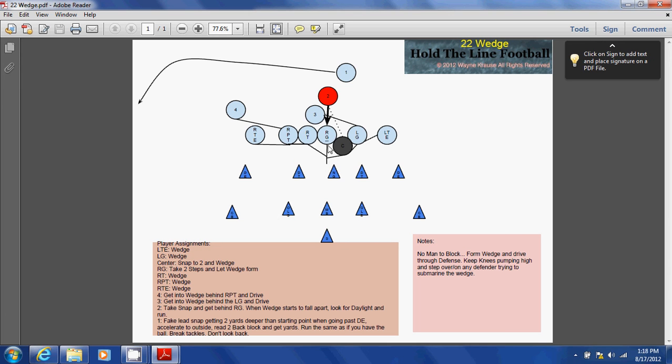The right guard will feel—basically he'll take his two steps and then he will quickly feel the wedge form behind him and start to push him forward like he is a battering ram. Now the four back and the three back—the three back gets in behind the guard, the four back gets in behind the power tackle, and they drive this forward as well.